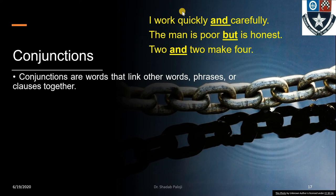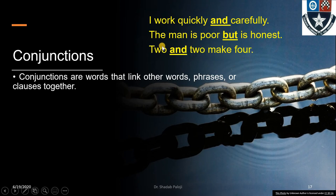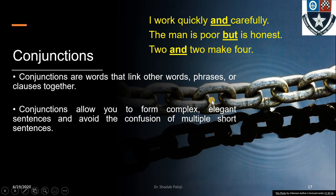Conjunctions are words that link other words, phrases, or clauses together. In 'I work quickly and carefully,' a clause and a word are joined by 'and.' In 'The man is poor but is honest,' a clause and a phrase are joined by 'but.' Conjunctions allow you to form complex, elegant sentences and avoid the confusion of multiple short sentences. Without them, we would write: 'I work quickly. I work carefully.' — which makes no sense as separate statements.